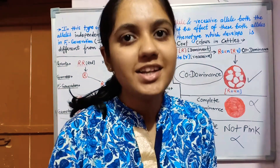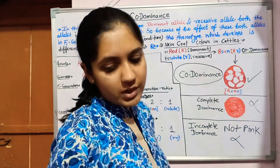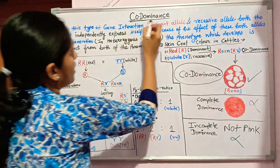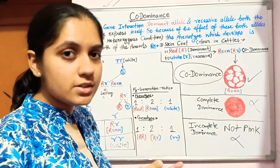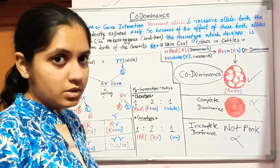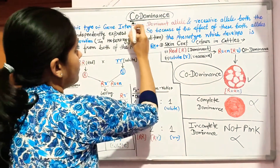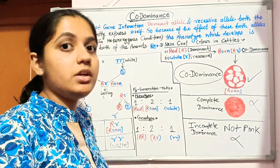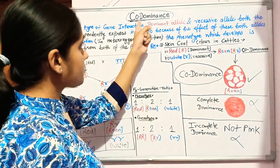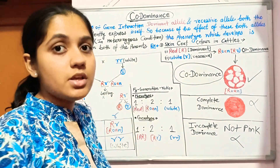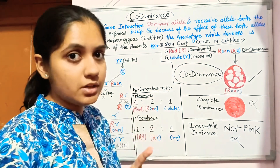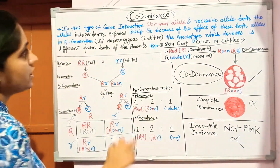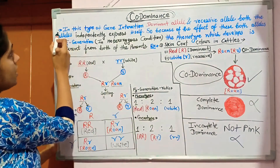Hello friends, welcome again to my channel Asma's Botany. Today we will discuss a new topic: co-dominance. 'Co' means together with someone other. I have already discussed the types of intragenic and intergenic gene interaction. Co-dominance is an intragenic type gene interaction, meaning it is between the two alleles of a single gene.